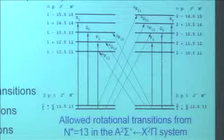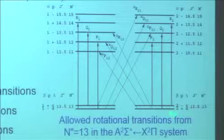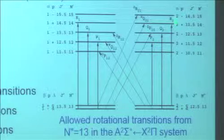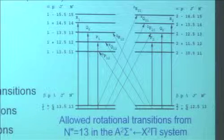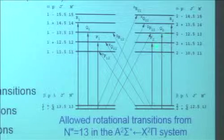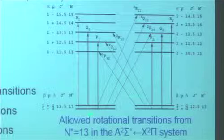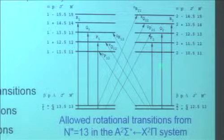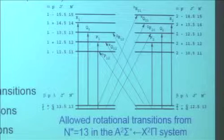So you can kind of, once you draw the diagram, exclude all the other possibilities. You can't have delta J of two and still call it an R, Q, or P. That's kind of what it's all about. The strong ones are the bold lines — the cross-branch ones go to double subscripts and are usually weak.